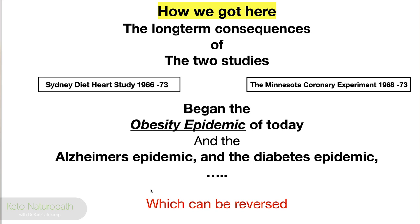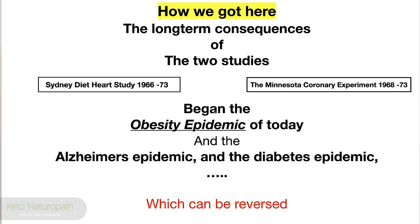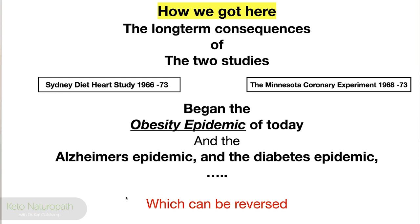So how we got here: the long-term consequences of two studies — the Sydney Diet Heart Study from 1966 to 1973, and the Minnesota Coronary Experiment from 1968 to 1973. Those conclusions were false, incomplete — you could even say fraudulent. Some people are really angry about it and call it a lie. Whatever the conclusions were, they were locked in for the better part of 50 years, and began the obesity epidemic, the Alzheimer's epidemic, the diabetes epidemic, and the autoimmune epidemic of today — which can be reversed.